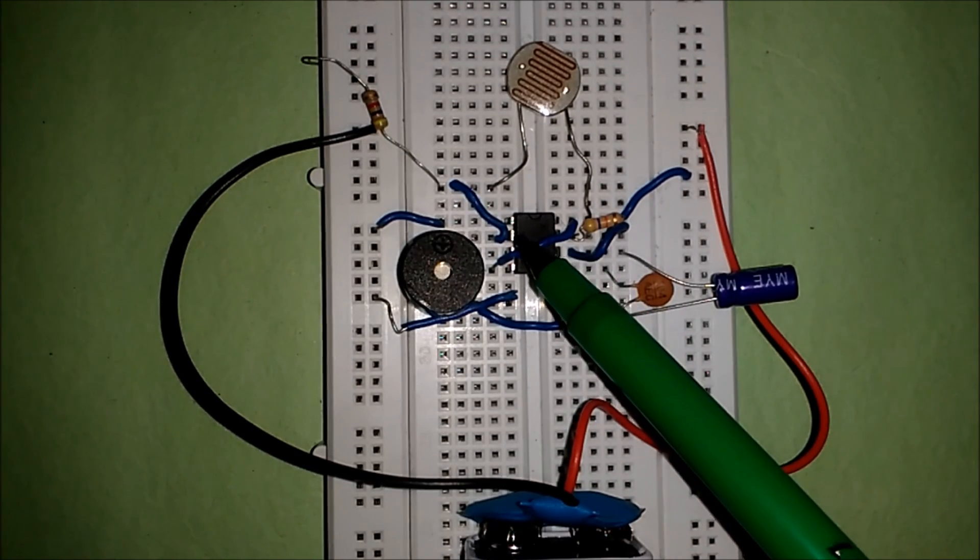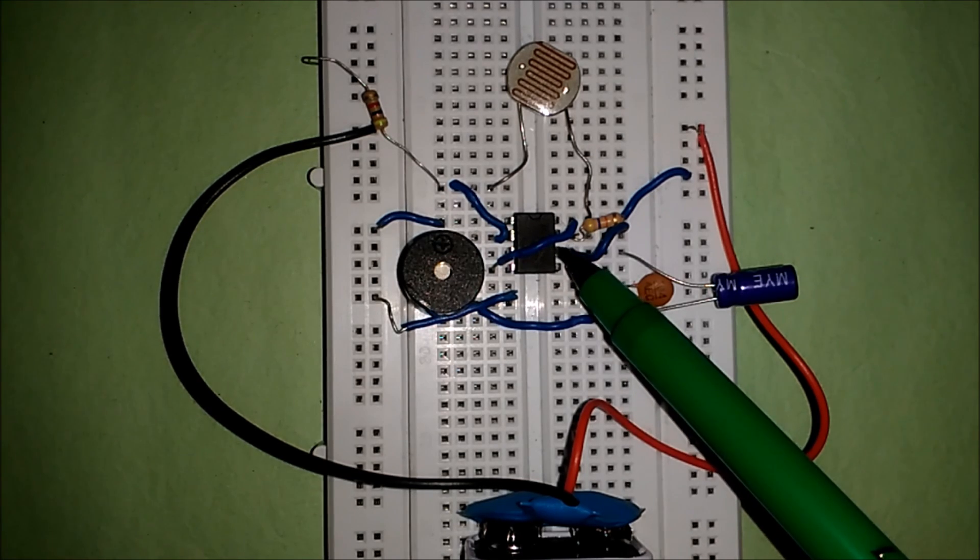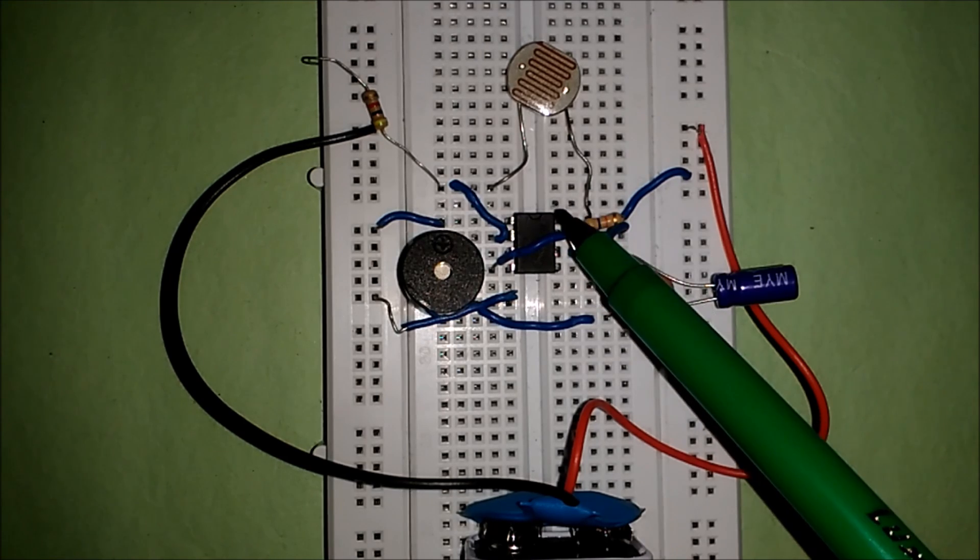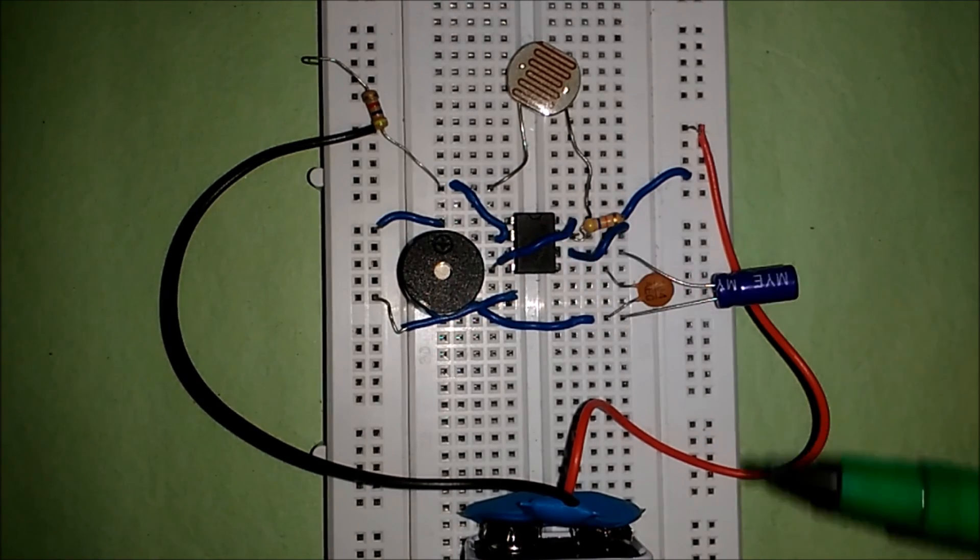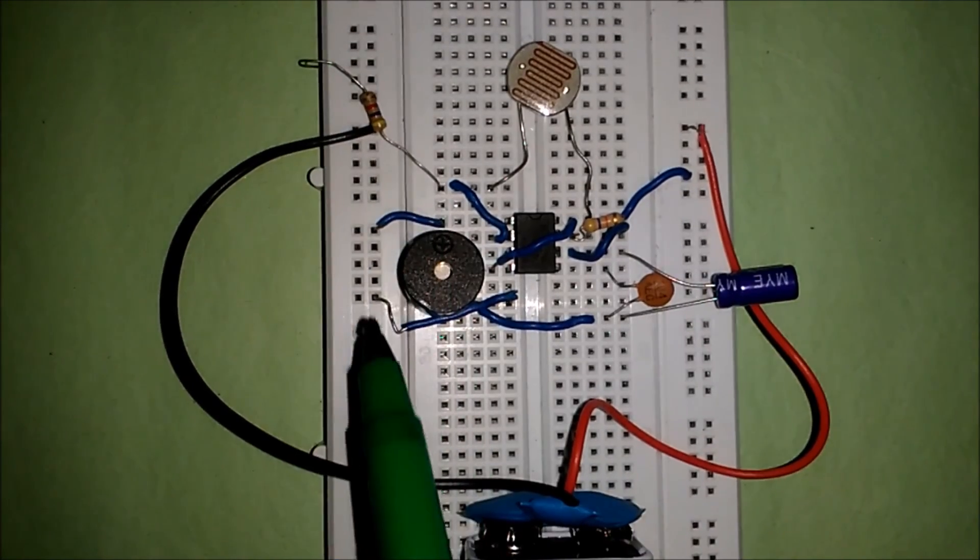First one is Ground, then your Trigger, then Output, then Reset, then Control, then Threshold, then Discharge, and at last this is VCC. Plus Positive of Battery is this one and Negative of Battery is here.